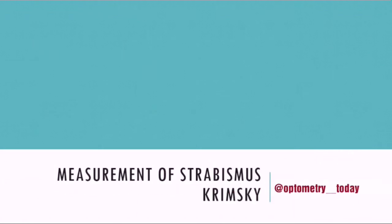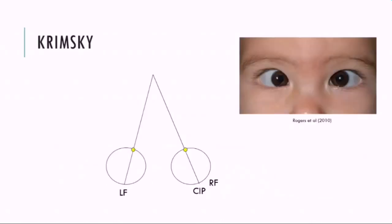The Krimsky test is utilised in a select group of patients, generally young children and those with poor vision in one eye. So how do we go about utilising the Krimsky to measure deviations?